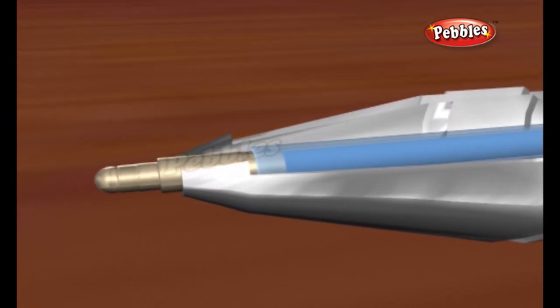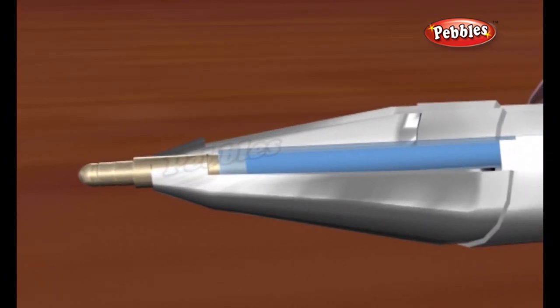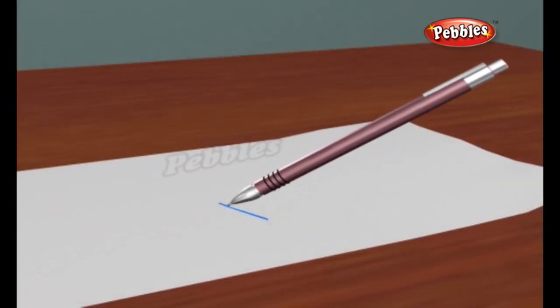The ball is kept in place between the ink reservoir and the paper by a socket, and while it is in tight, it still has enough room to roll around as you write.